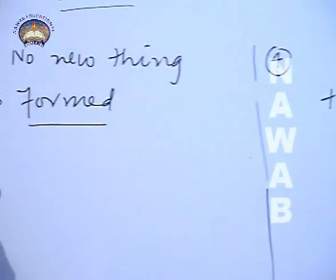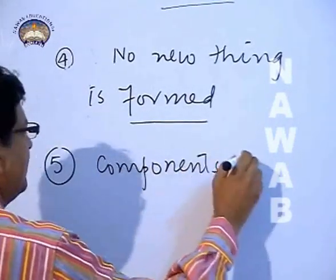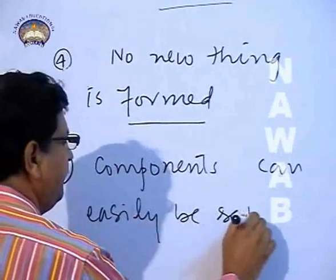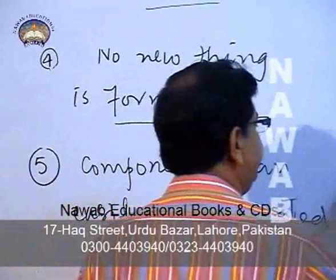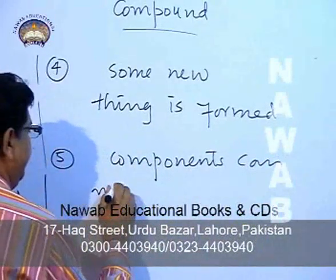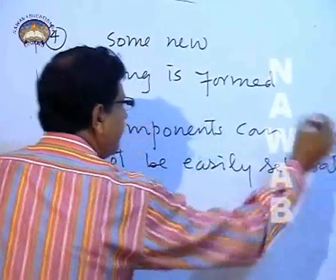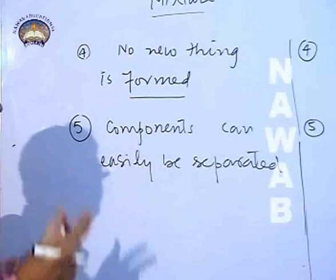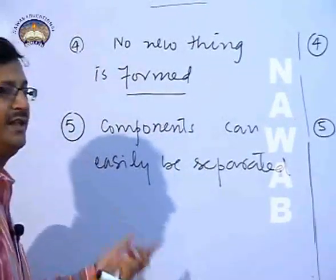The fifth difference: the components in a mixture can easily be separated. While in a compound, they cannot be easily separated. We can even see the different components separately in a mixture. In a compound, the components cannot be seen separately because they have formed a new substance.